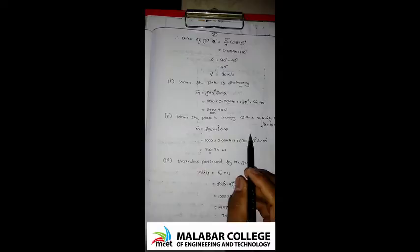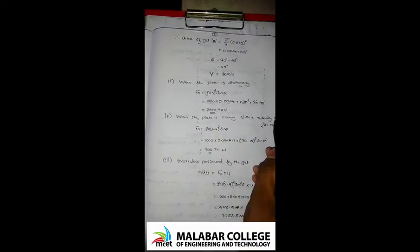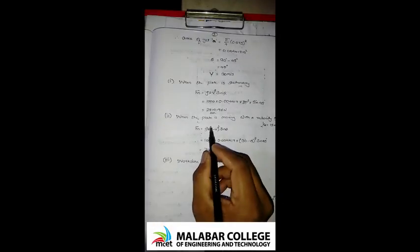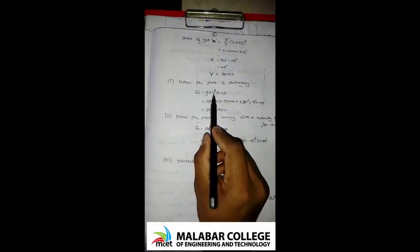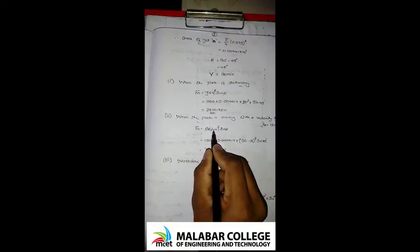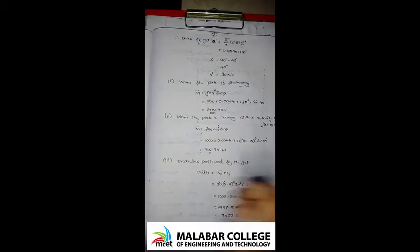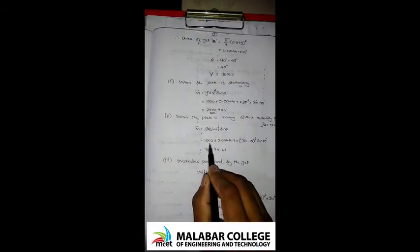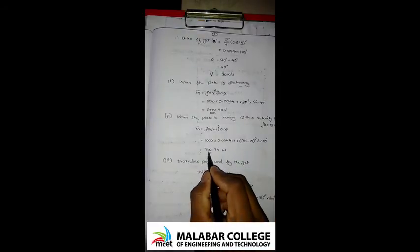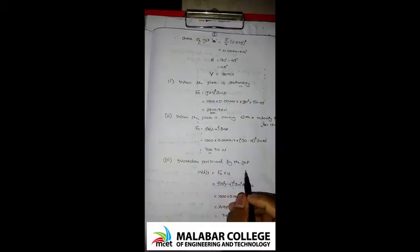In the case where the plate is moving at u = 15 meters per second, the equation becomes Fn = ρA·(V − U)²·sinθ. By direct substitution, the answer is 702.740 N.